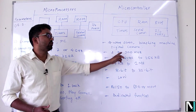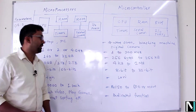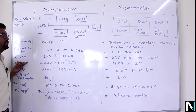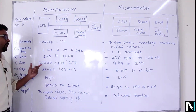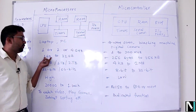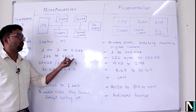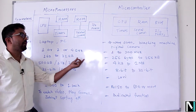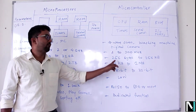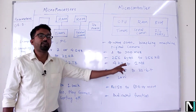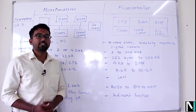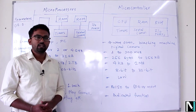The next parameter is operating frequency. For microprocessors it starts at 1 GHz, 2 GHz, or 4 GHz, whereas for microcontrollers it is only 1 to 300 MHz. The RAM available in a microprocessor based system ranges from 1 GB to almost 32 GB.